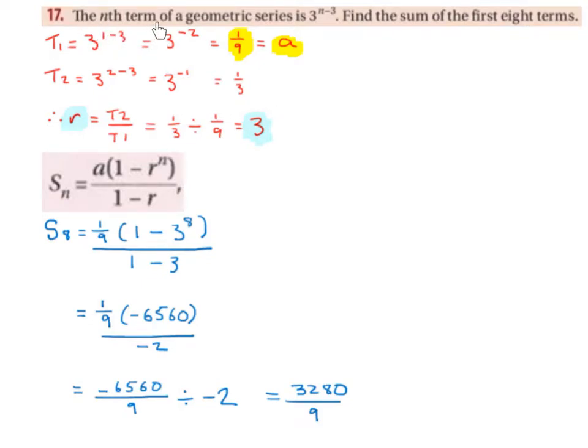The nth term of a geometric series is 3 to the power of n minus 3. Find the sum of the first eight terms. So we're going to find term 1 and term 2 by substituting in 1 and 2.